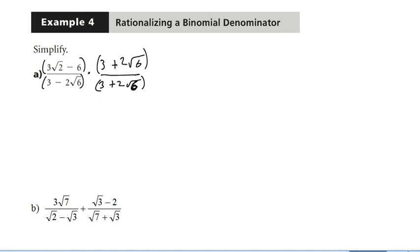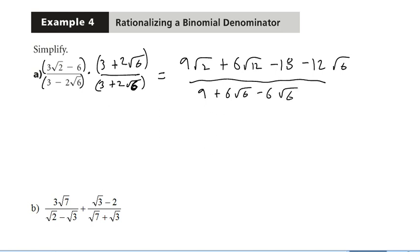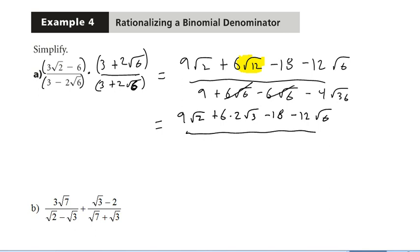So on the top, 9 root 2 plus 6 root 12 minus 18 minus 12 root 6. That's all over 9 plus 6 root 6 minus 6 root 6 minus 4 root 36. So we should change that 12 into a mixed radical. So that's 9 root 2 plus 6 times 2 root 3 minus 18 minus 12 root 6. And I put those all over, those go to 0, so I get 9 minus 4 times 6 is 24.